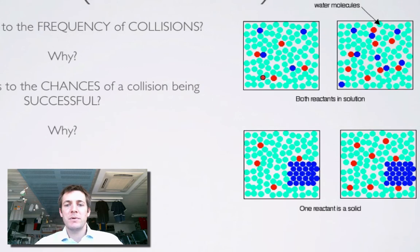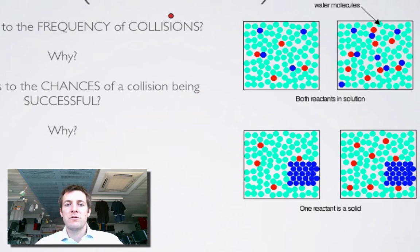It's important to mention volume: if you had a very big beaker you might have more particles, but they'd be more spread out and less likely to collide. So it's not about how many particles there are overall — it's about how many there are per unit volume. The frequency of collisions increases as we increase concentration because there are more particles per unit volume.